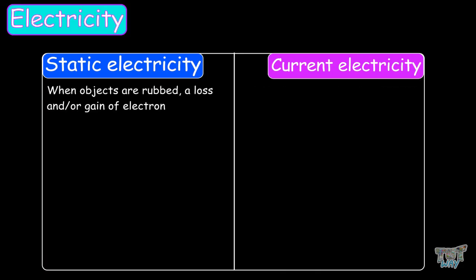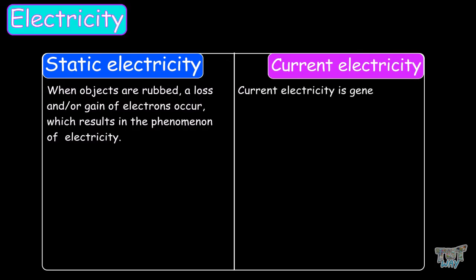When objects are rubbed, a loss or gain of electrons occurs, which results in the phenomenon of static electricity, and current electricity is generated by batteries and power plants.